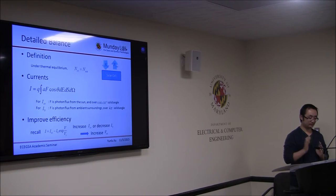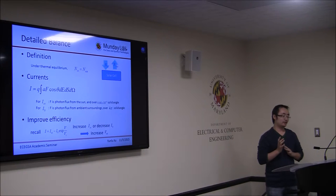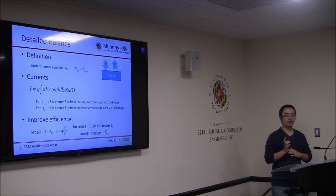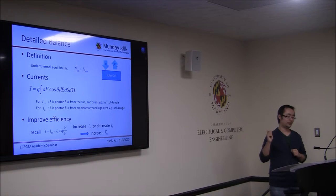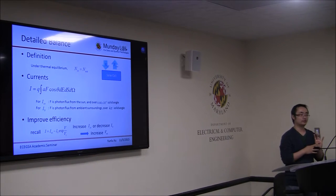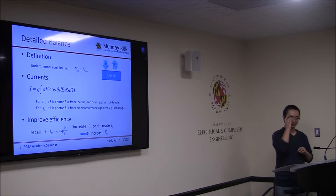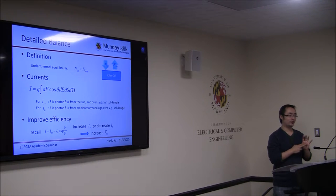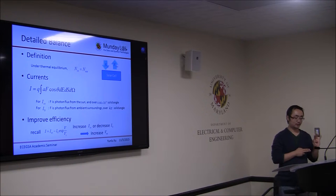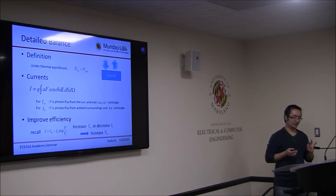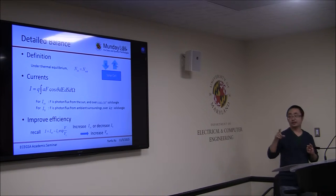The definition of detailed balance is: under thermal equilibrium and open circuit conditions, the number of photons entering a cell equals the number of carriers leaving the cell, either as photons (open circuit) or electrons. The relevant currents are the short-circuit current and the reverse saturation current. Because of detailed balance, in open circuit conditions, these are equal to each other.